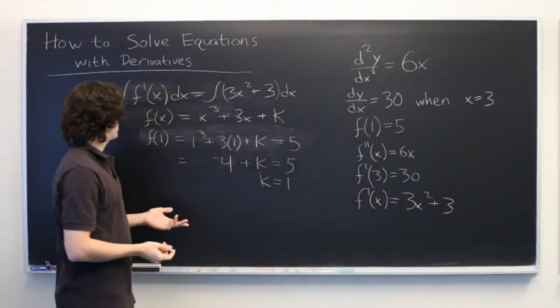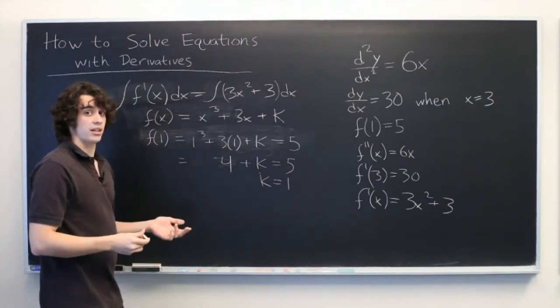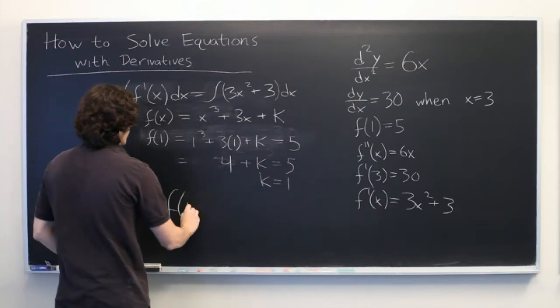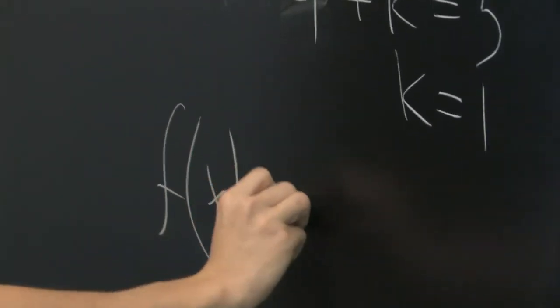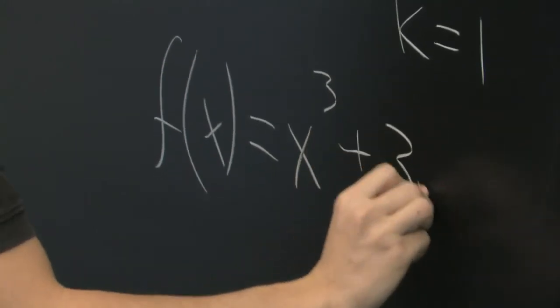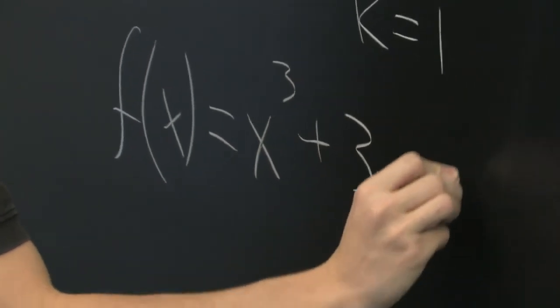And so, now we have all the information we need to determine what f of x is. f of x is equal to x cubed plus 3x plus 1.